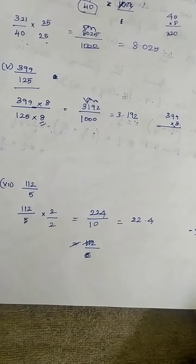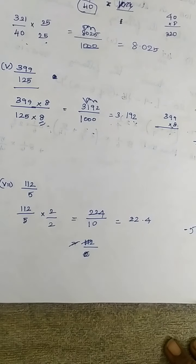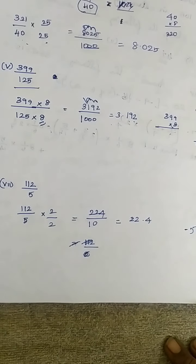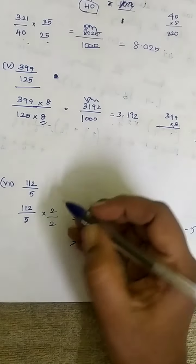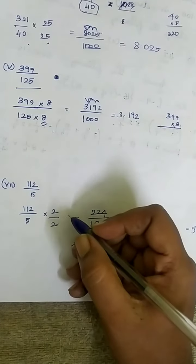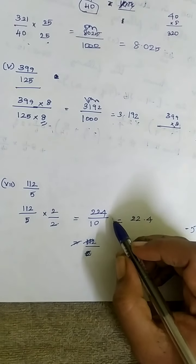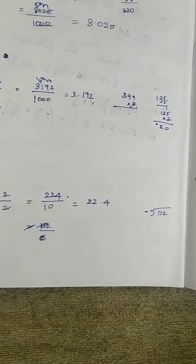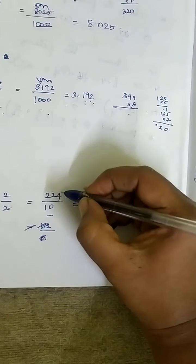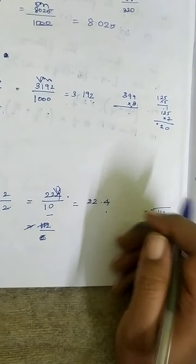Problem number 7: 112 divided by 5. How to make 5 a multiple of 10, 100, or 1000? If you multiply 5 by 2 you will get 10, so it is an easy problem. Multiplying both numerator and denominator by 2. 112 multiplied by 2 is 224. 5 times 2 is 10. So in the denominator you have 1 zero, meaning you move 1 digit towards the left. The answer is 22.4.